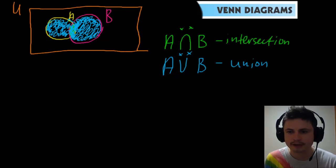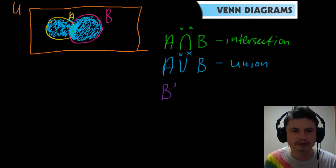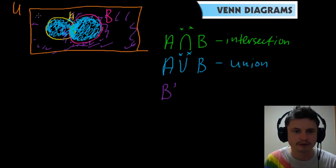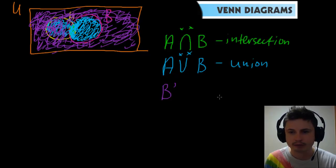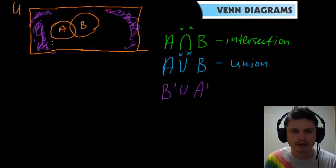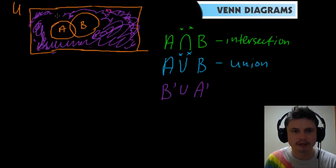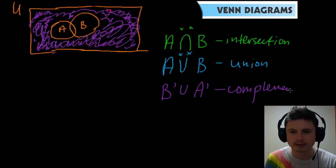Next, let's take a look at 'not B,' or the complement of B. That's basically everything outside of circle B but still part of the universal set U. Everything that is not inside the B circle is not B. Similarly, not A is everything outside the A circle. If it's not B and not A, it's everything outside of both A and B — this is the complement of the union of A and B.